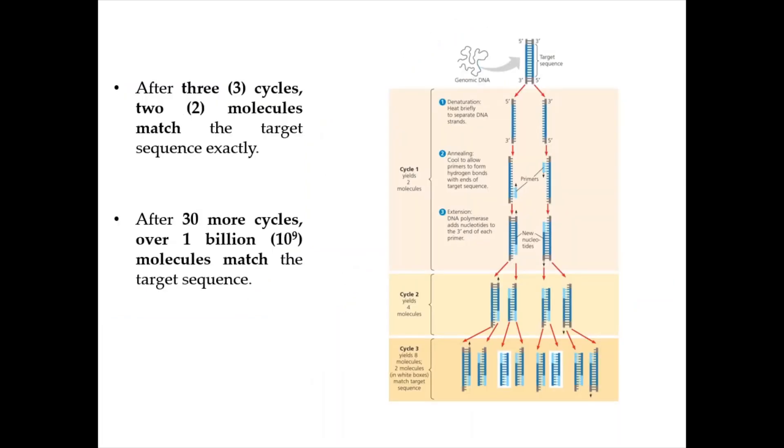After three cycles, two molecules of DNA would match the target sequence exactly. After 30 more cycles, over one billion molecules would match the target sequence. To complete around 40 cycles of PCR, it takes about 45 minutes to one hour.